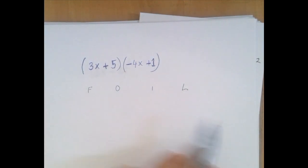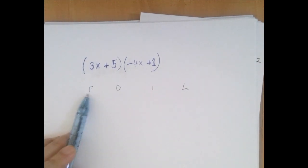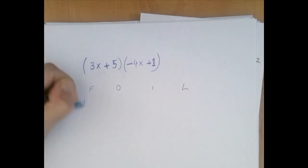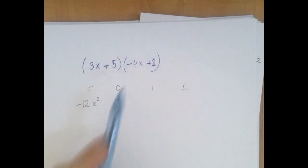There are going to be four little pieces added or subtracted. So the first piece, F, is the first piece times the first piece. So that's 3x times negative 4x, that's negative 12x squared. Negative times positive, that's negative. 3 times 4 is 12, and x times x is x squared.